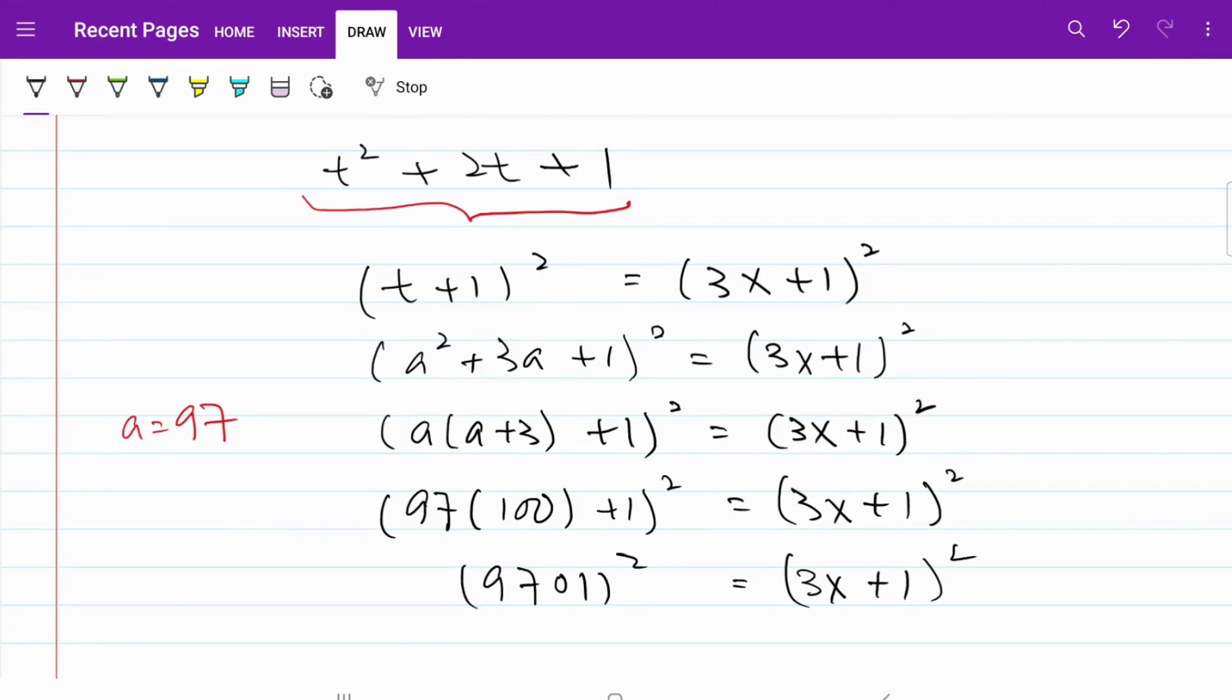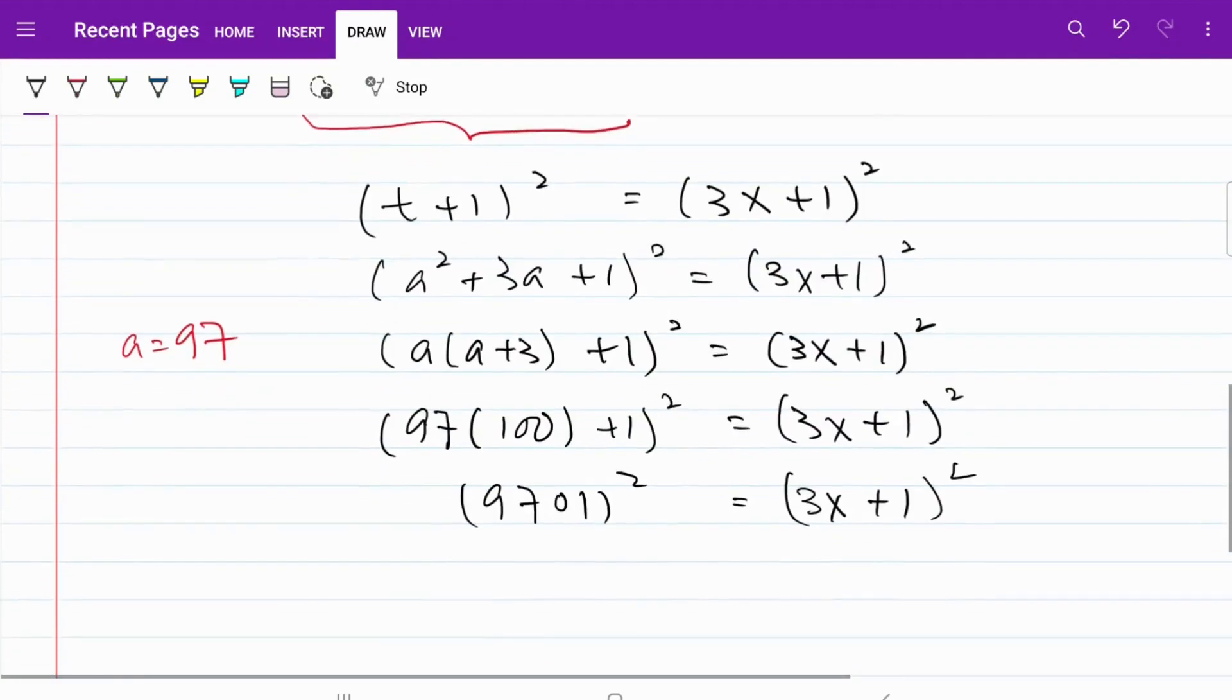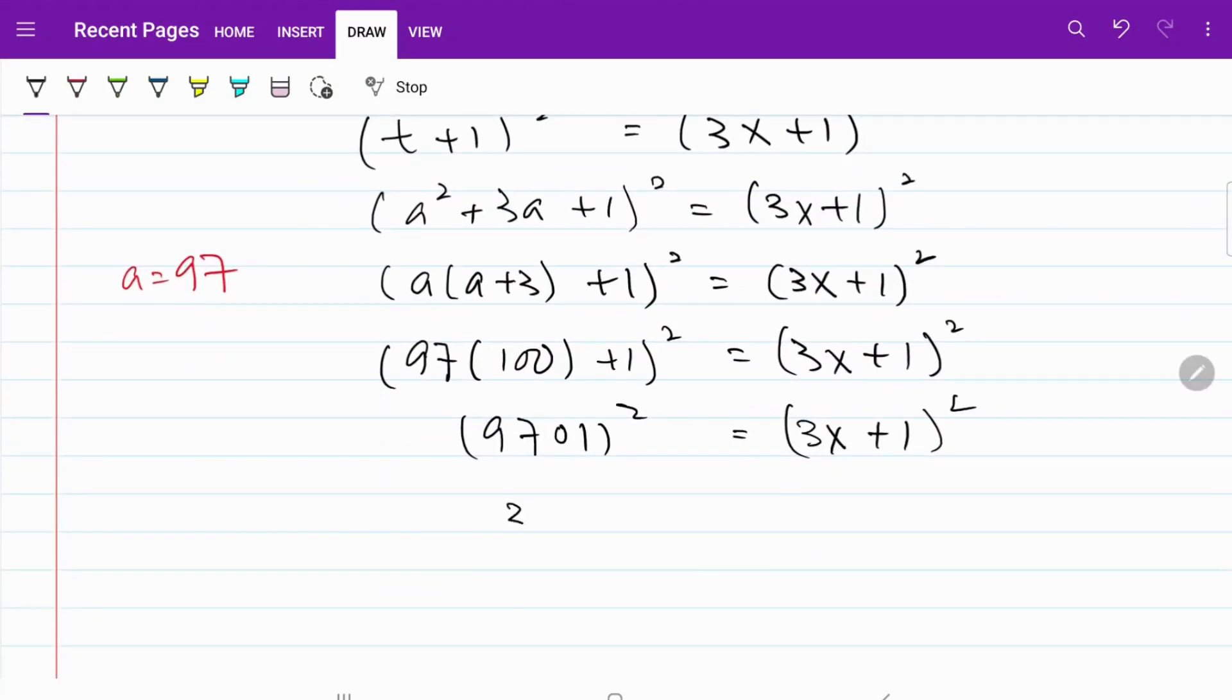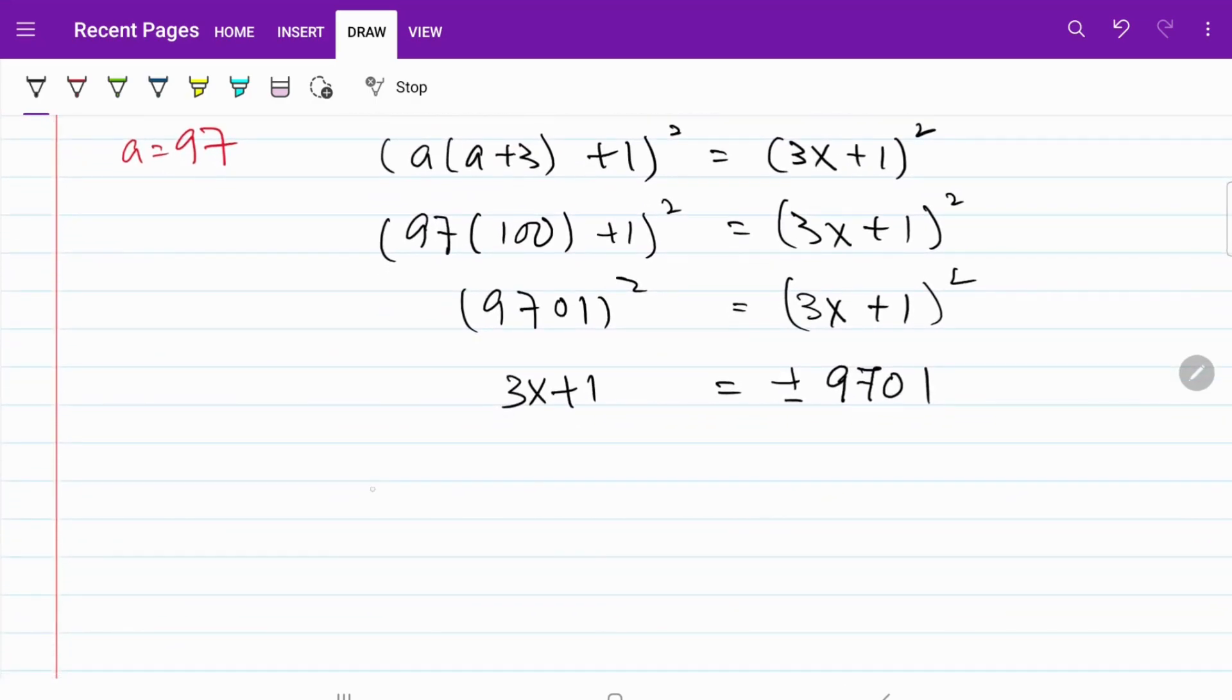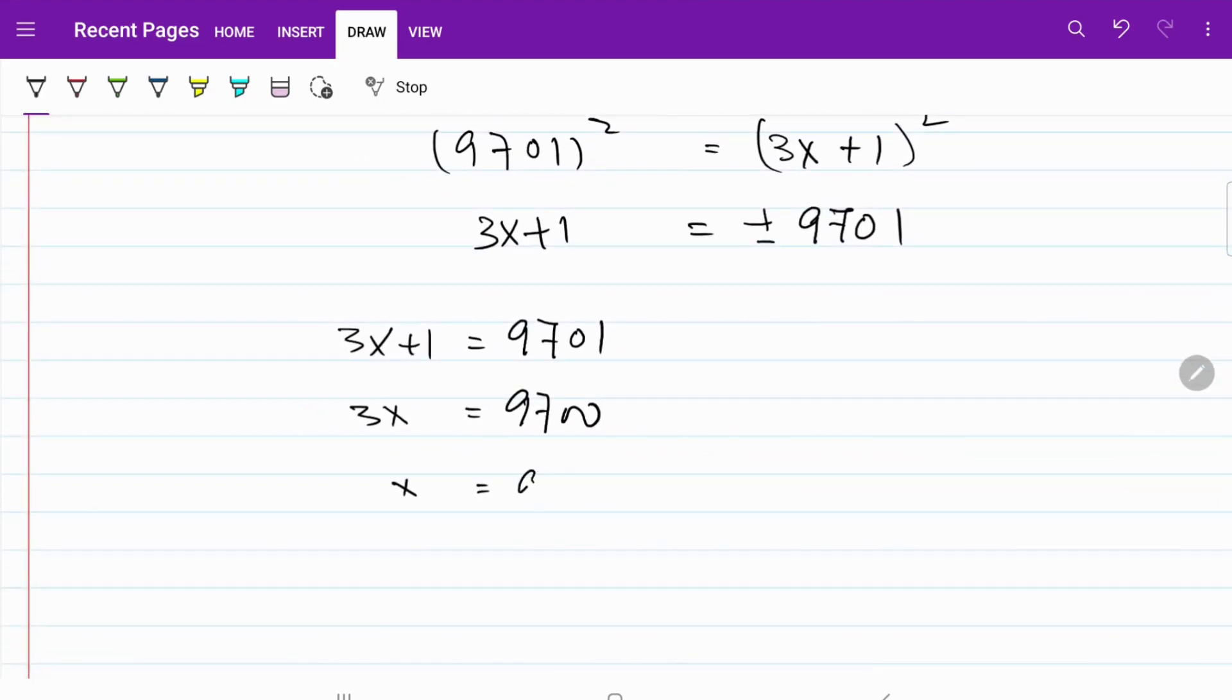We can now cancel the square on both sides, but we want to be extra careful. I have 3x plus 1 is actually equal to plus minus 9,701. If I go with a positive route, I have 3x plus 1 is equal to 9,701. 3x is equal to 9,700.